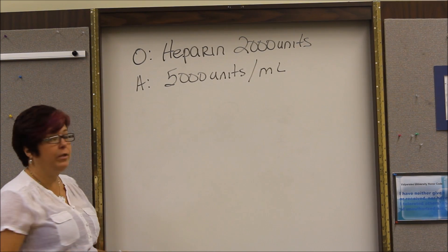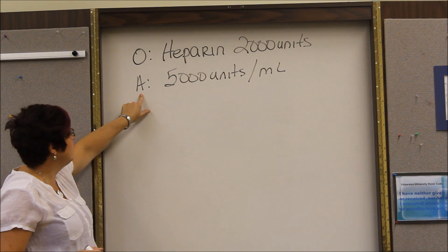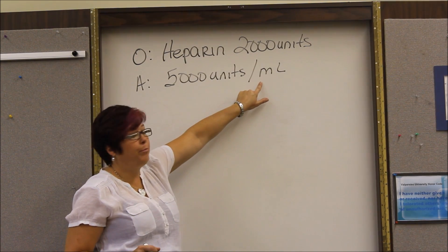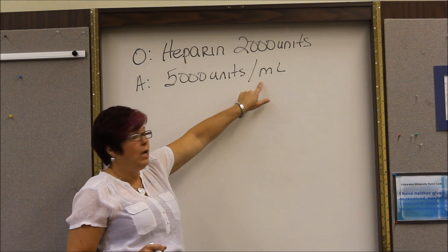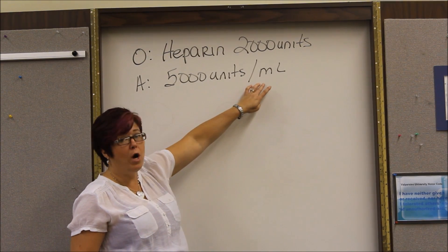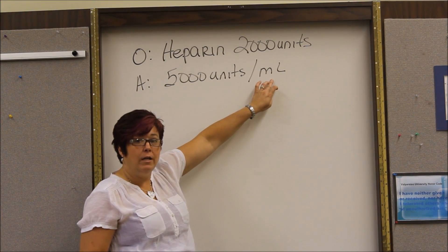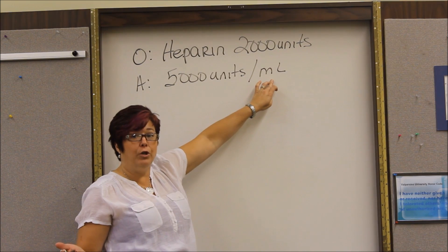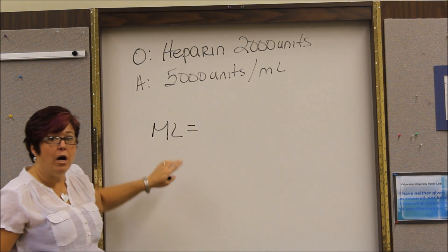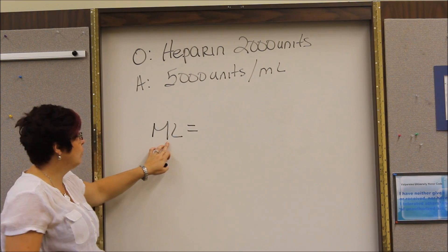Now, our doctor has ordered Heparin 2,000 units. It is available to us in a vial, a solution of 5,000 units per one milliliter. Whenever there isn't a number in front of the milliliters, of course, that means that there's only one. So it is a solution. The medication is in, we're going to draw it up in milliliters so that is what we are looking for as our answer. So that's what goes to the left of the equal sign.